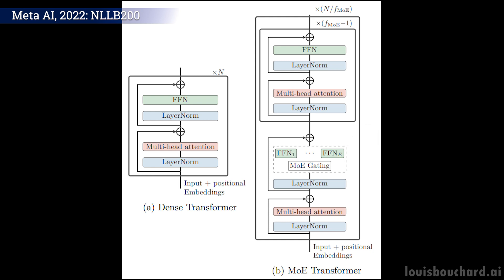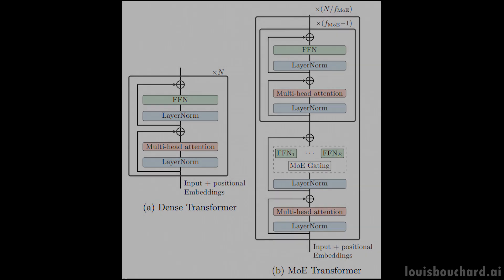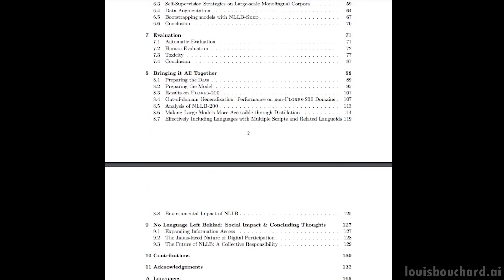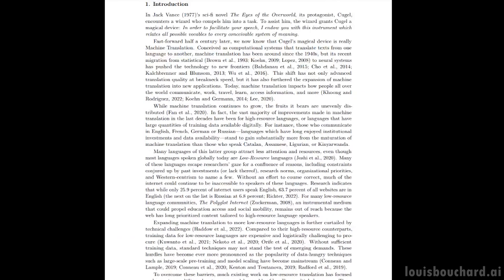They also do multiple small tweaks to the architecture itself. Still, the use of Mixture of Experts models and source language encodings are certainly the most important changes differentiating this new model from unilingual models like GPT-3. I strongly invite you to read their amazing and detailed paper if you are interested in all the internal details of the architecture.